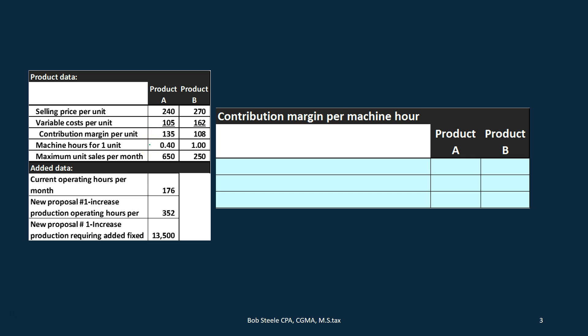The machine hours are 0.4 for A and 1 for B, and the maximum unit sales per month are 650 of product A and 250 of product B. Looking at this data, the contribution margin is $135 for A and only $108 for B. So we might conclude that every unit of A sold generates more money than every unit of B — and if everything else were equal, that would be our conclusion.